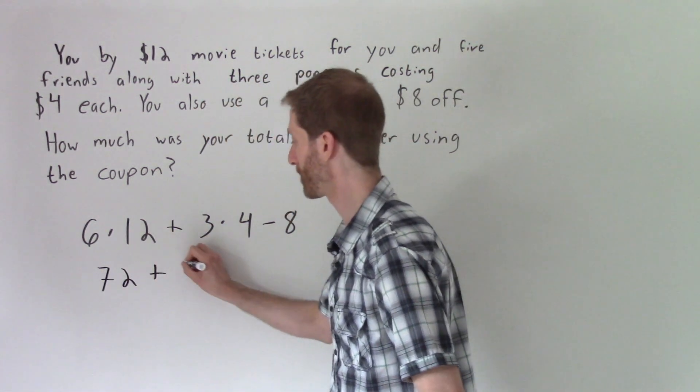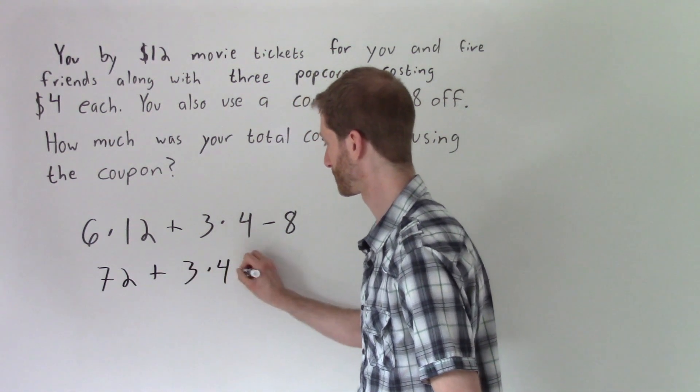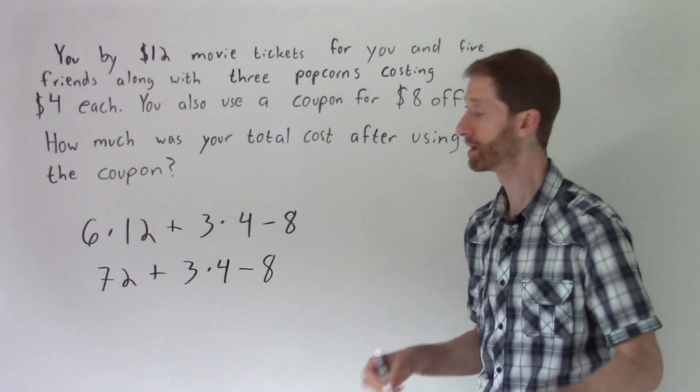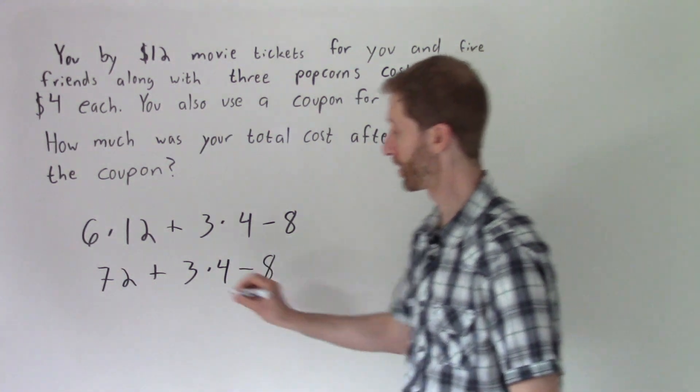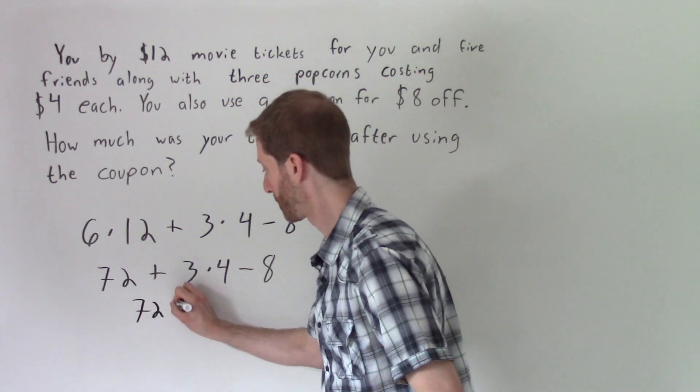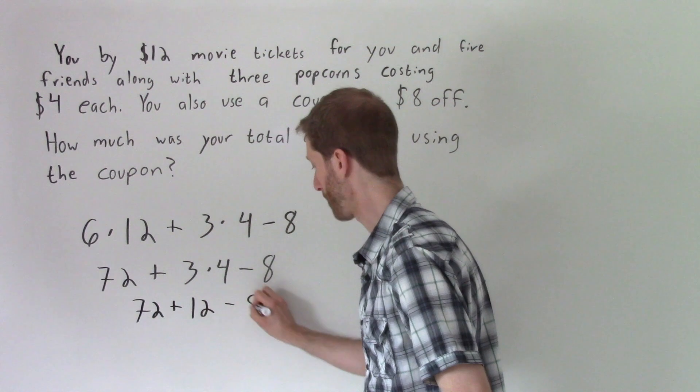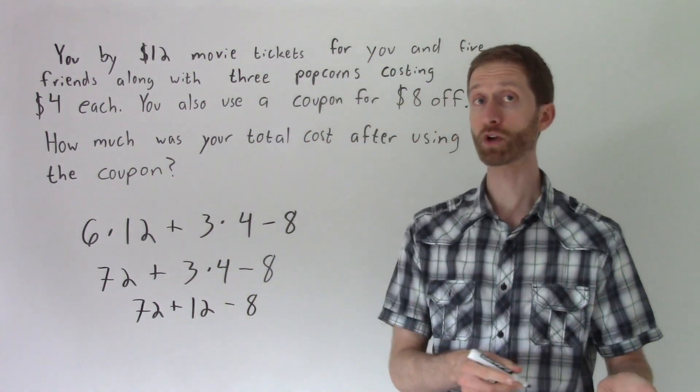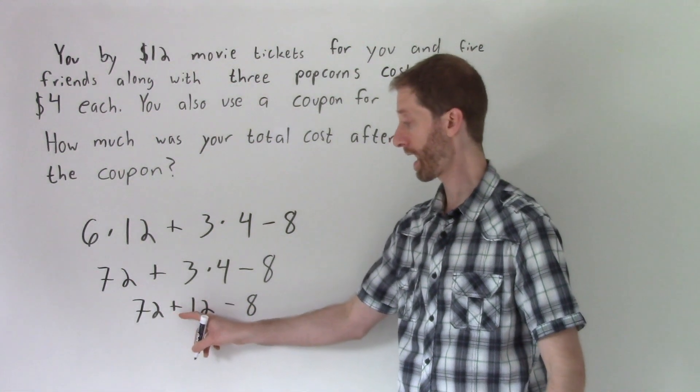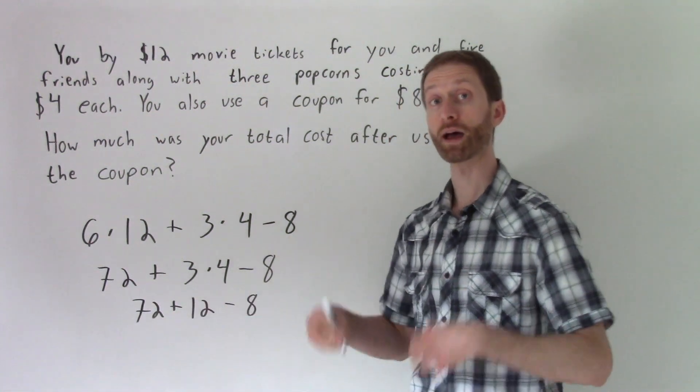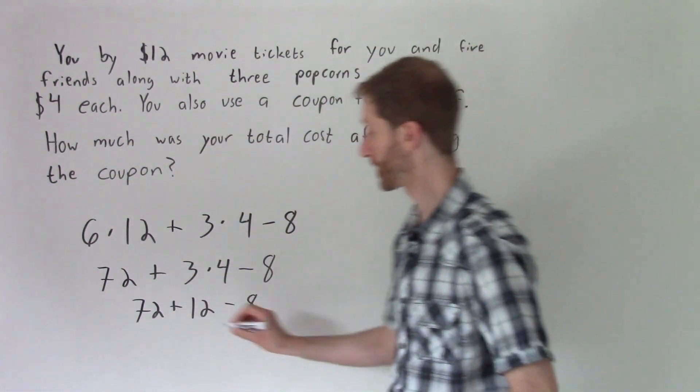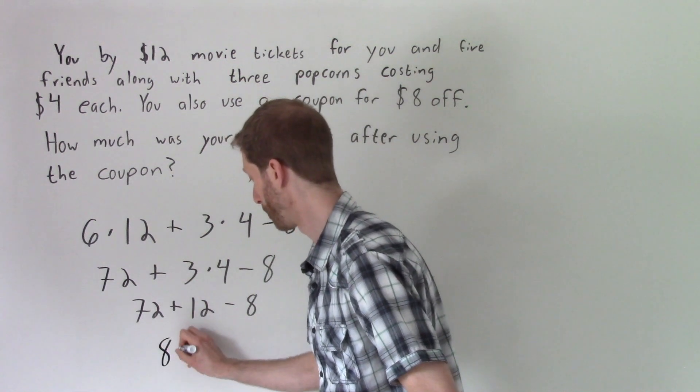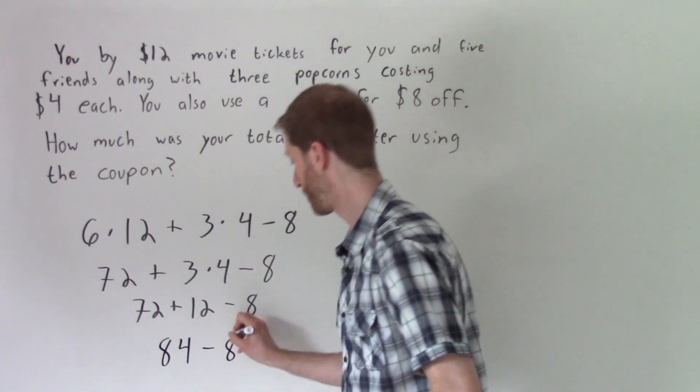And then we keep everything else the same. Then we go and we do the multiplication here. So it's going to be 72 plus 12. Keep everything else the same, minus eight. Now we do addition and then subtraction because looking left to right, we have addition followed by subtraction. So that's going to be 84 minus eight.